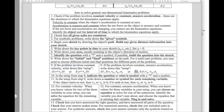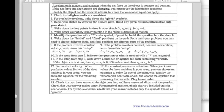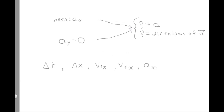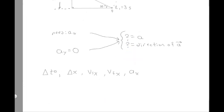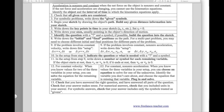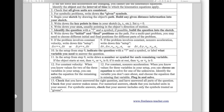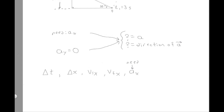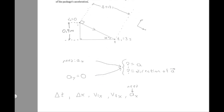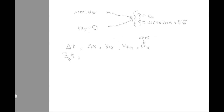We want to build the question into our setup. None of these variables is precisely what the question asks for, but we know we need a_x to figure out the overall acceleration. I'll label a_x as the variable we need. Now we need to fill in the rest of our setup. Delta t was 3 seconds — remember to always include units when writing a number by itself.